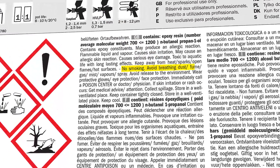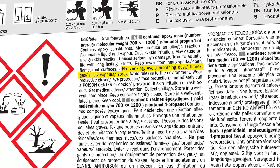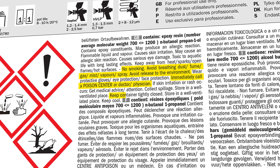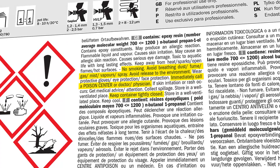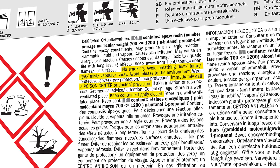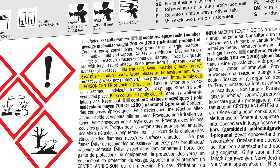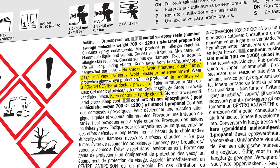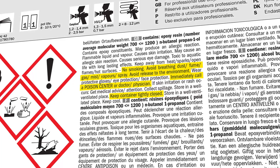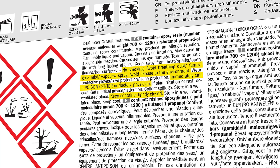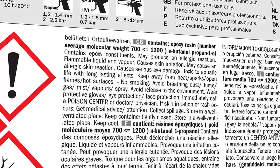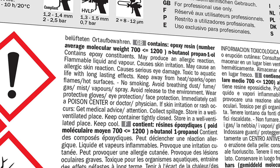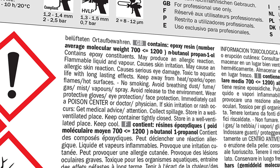The precautionary statement describes the recommended measures that should be taken to minimize or prevent adverse effects resulting from exposure to a hazardous chemical or improper storage, handling and disposal. The hazard statement describes the nature of the hazards of a chemical, including, where appropriate, the degree of hazard.